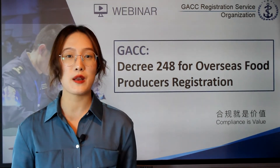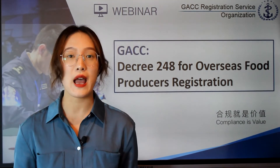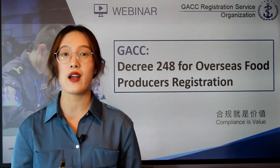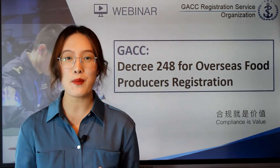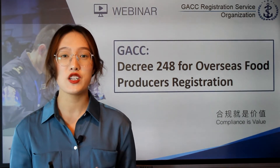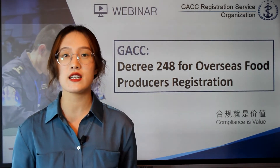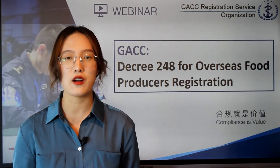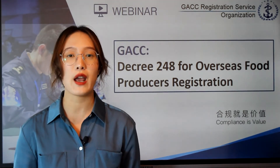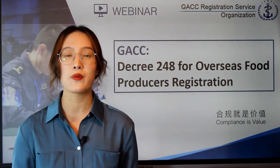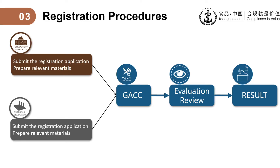After meeting the registration conditions and confirming your registration method, what are the procedures for registration? Firstly, you should submit the registration application and prepare the relevant materials. Then submit the materials to GACC, and GACC will determine to grant or deny your registration after evaluations and review. This is a brief application process. For further information, you can contact me anytime.